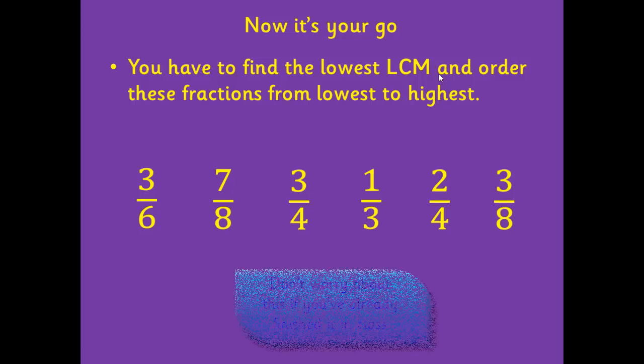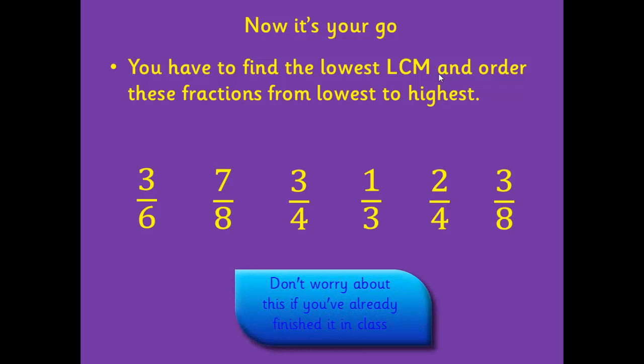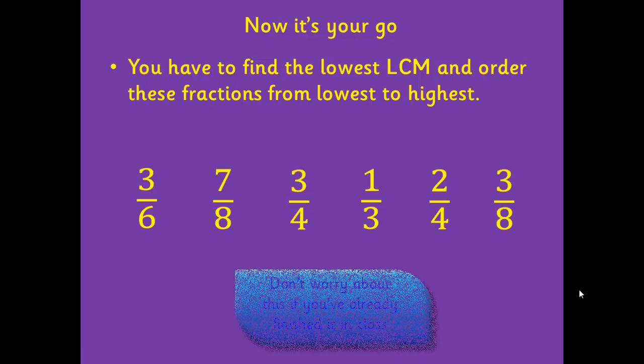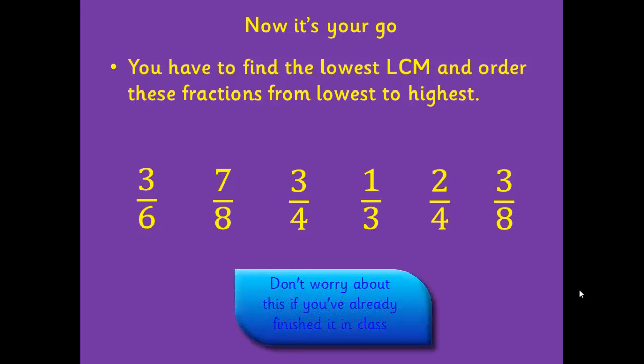Now it's your go. You'll need a pen and paper to help you find the lowest common multiple of these fractions. Then you'll have to order them from lowest to highest. Remember all of these fractions will share a common multiple. So you'll have to look at your 6, 8, 4 and 3 times tables to find which number or numbers appear in all of those. Then you'll have to find the lowest one, then you'll have to find the equivalent fraction and order them so that they all have the same denominator.